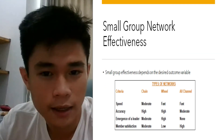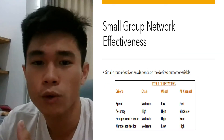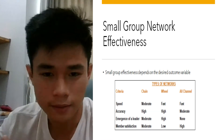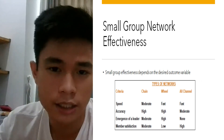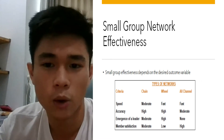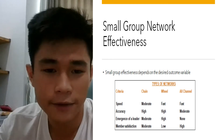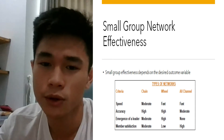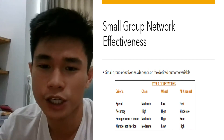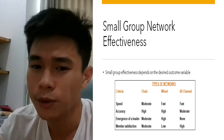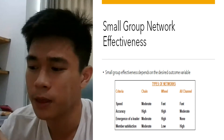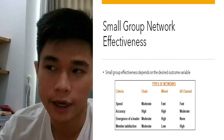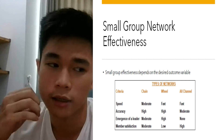In the next slide, there is a chart of small group effectiveness depending on the desired outcome variable. On the left you can see three channels: chains, wheel, and all channels, showing the effectiveness and benefits of each type. In terms of speed, chains is moderate, wheel is fast, and all channels is fast. Chains is moderate because work cannot continue until the previous person finishes.